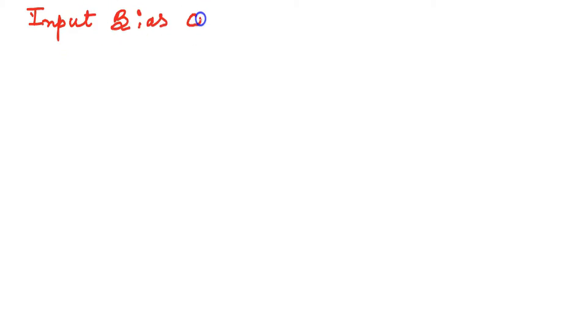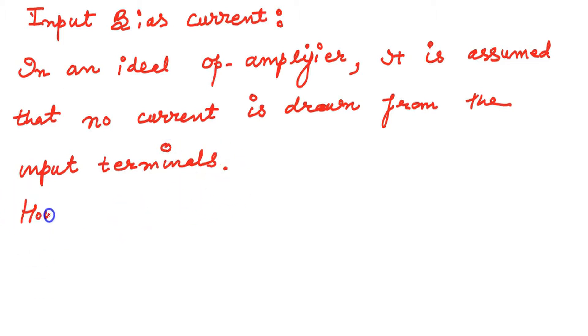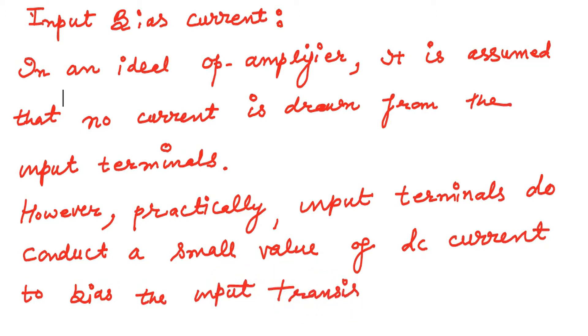The question is what is the input bias current? In case of an ideal op-amplifier, input impedance is infinity. If the input impedance is infinity, it never draws any current through its input terminal. But in case of the real op-amplifier, practically, input terminals do conduct a small value of DC current to bias the input transistors.